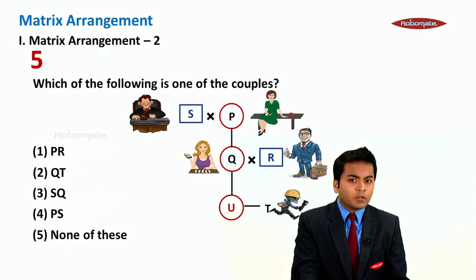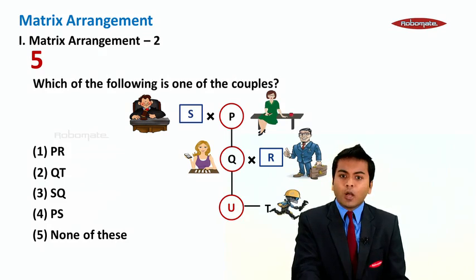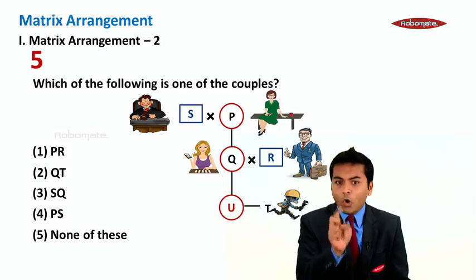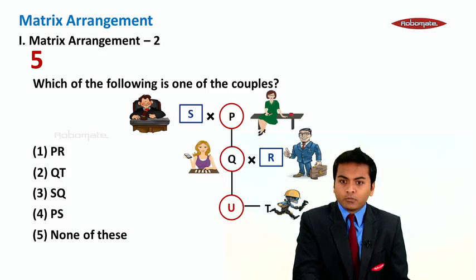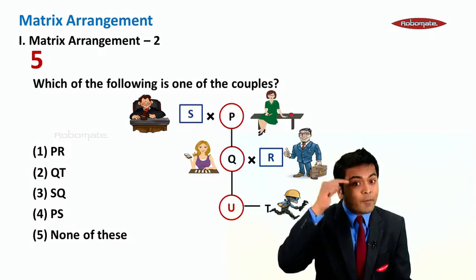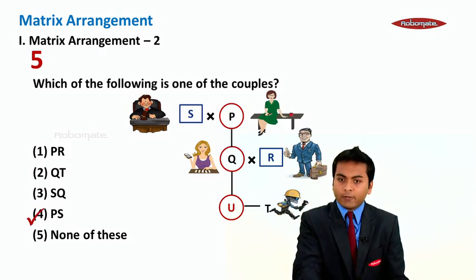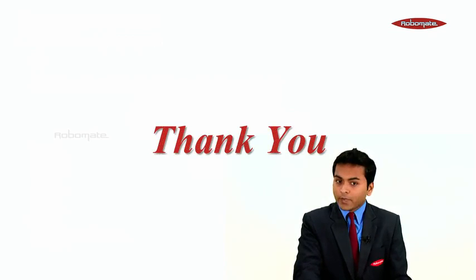Which of the following is one of the couples? So, couple can be either S, P or it can be Q, R. The first option is P, R. Not possible. Second is Q, T. Not possible. Third is S, Q. Not possible. The fourth is P, S. Yes, that's a couple in first generation. Clear everyone? Thank you very much.